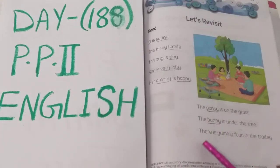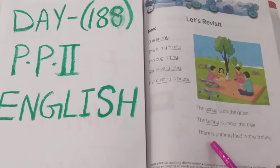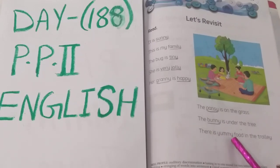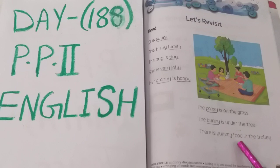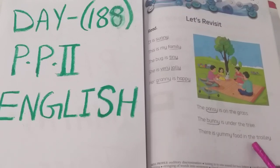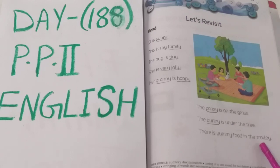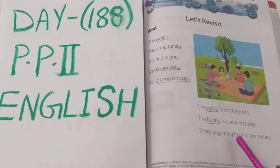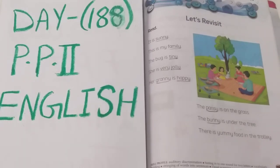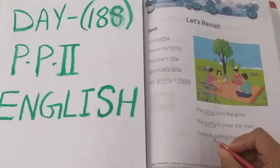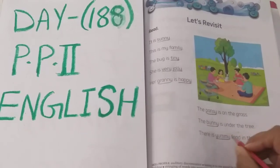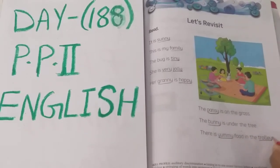Next: T-H-E-R-E, there. I-S, is. Y-U-M-M-Y, yummy. F-O-O-D, food. I-N, in. T-H-E, the. T-R-O-L-L-E-Y, trolley. There is yummy food in the trolley. So where is the letter Y for which we are pronouncing as E sound? There are two words — yummy as well as trolley.